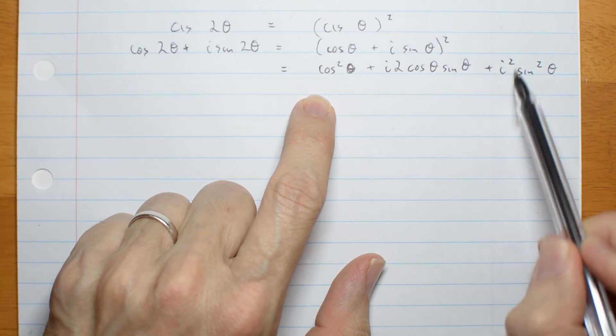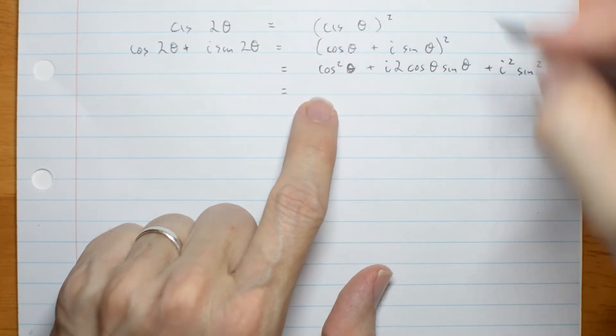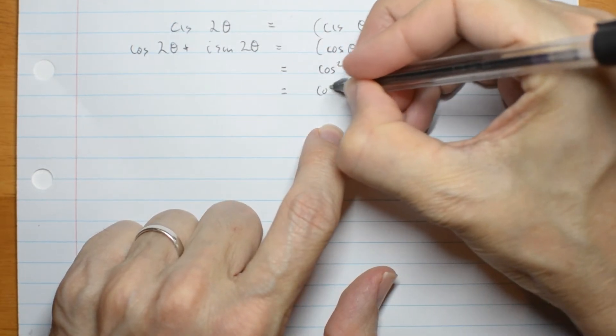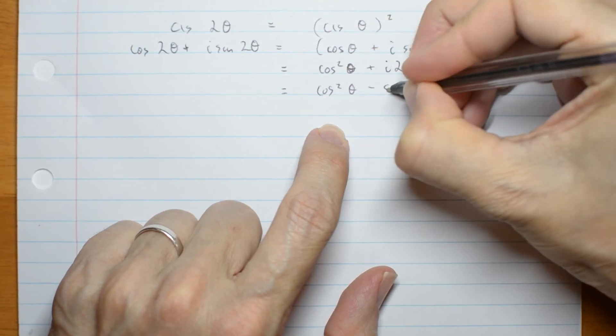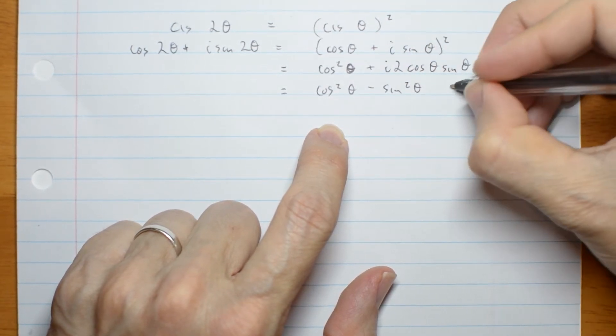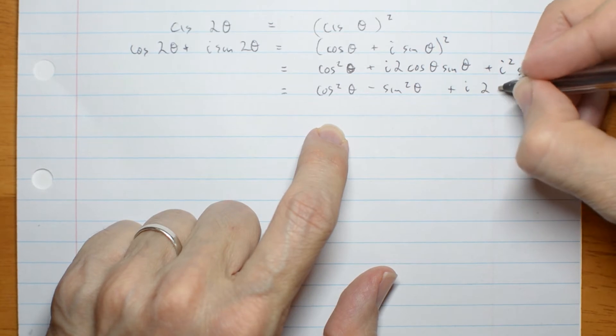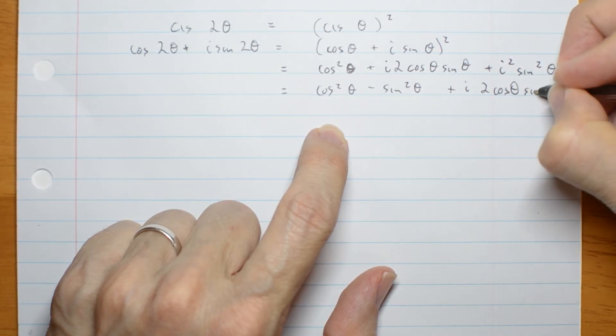But i squared is negative 1. Let me put the real parts together. Cos squared theta minus sine squared theta plus i 2 cos theta sine theta.